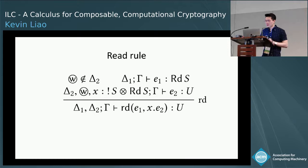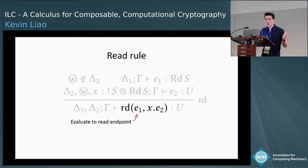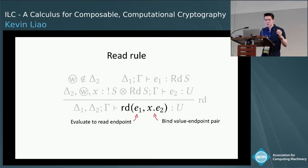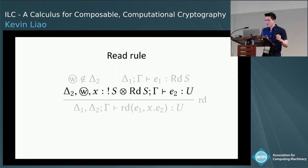In the read rule, which is essentially a let binding, we evaluate E1 to some read endpoint, then read a value off that endpoint, and bind as X the value-endpoint pair, which we can use in E2. We rebind the endpoint so that we can reuse it again if needed. E1 should have a type of some read endpoint.